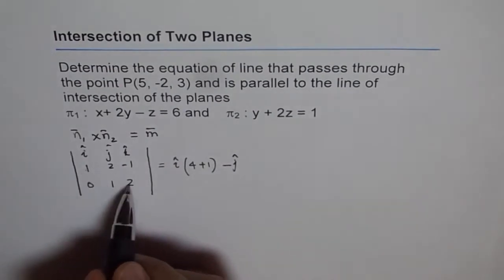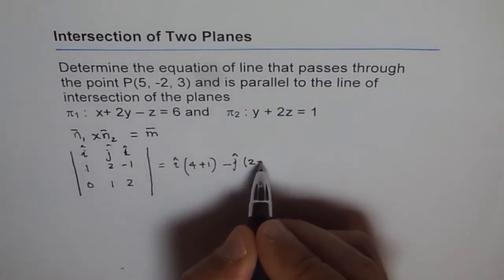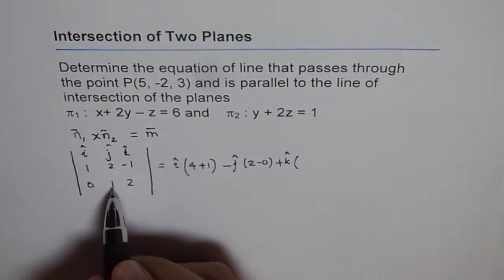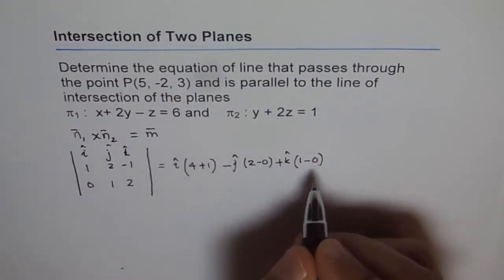And then 1 times 2 is 2 minus 0, plus k which means 1 times 1 is 1 minus 2 times 0 is 0. That's it.